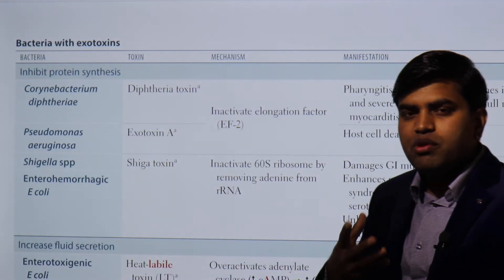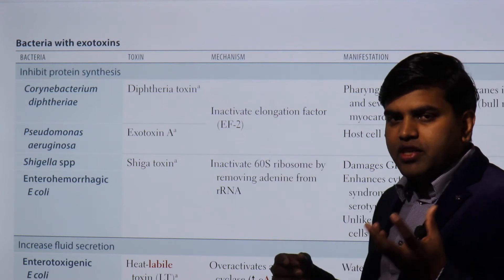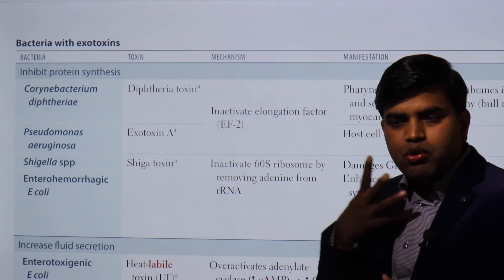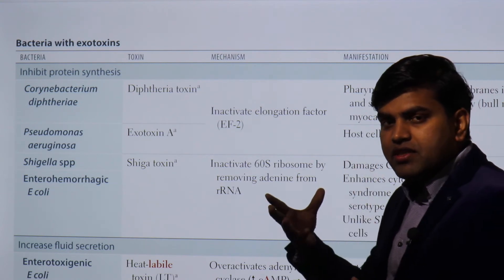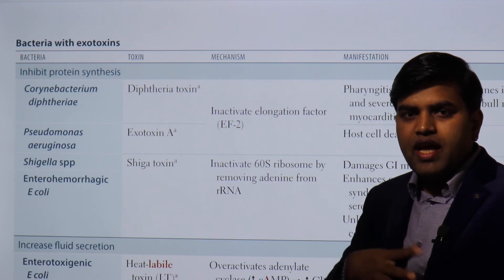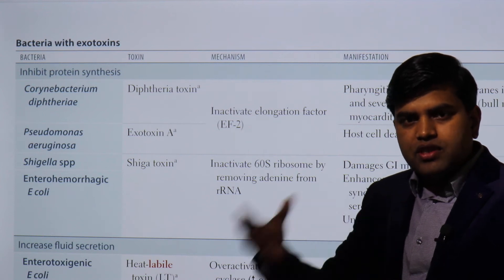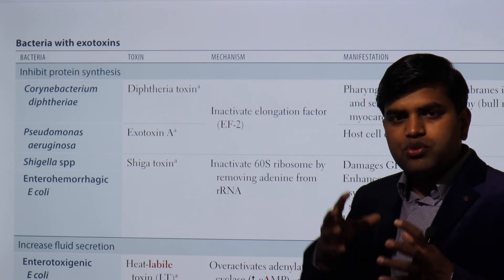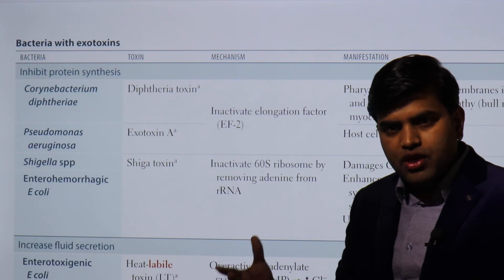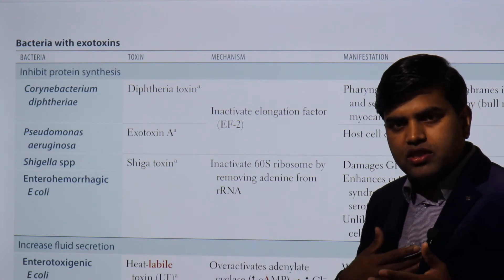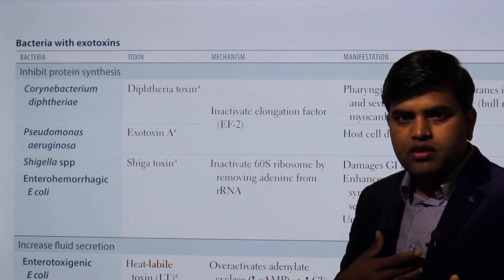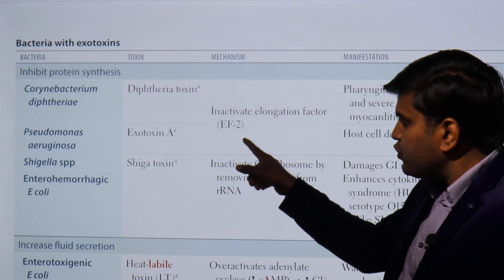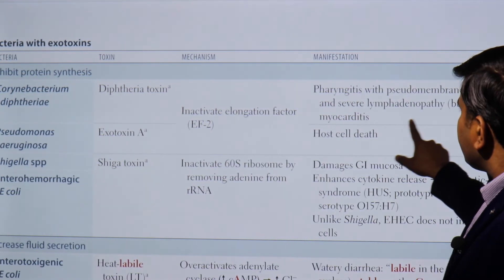Corynebacterium diphtheriae causes diphtheria. Clinically, a pseudomembrane forms in the throat and there is a 'bull neck' appearance due to lymphadenopathy. The toxin — not the bacteria — enters systemic circulation and attacks the cardiovascular and nervous systems. It inhibits elongation factor EF-2, blocking protein synthesis in the heart and nervous system, leading to arrhythmia, heart failure, and death.